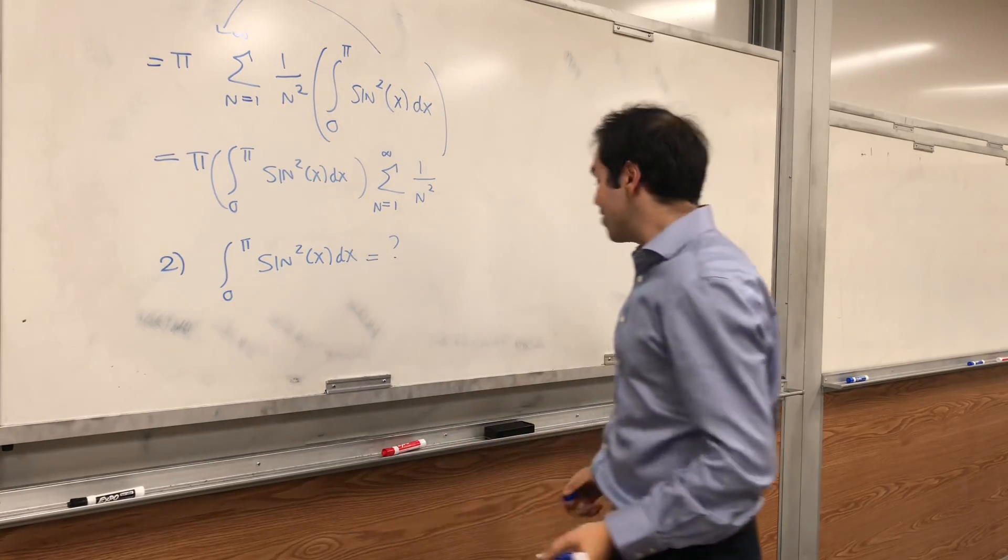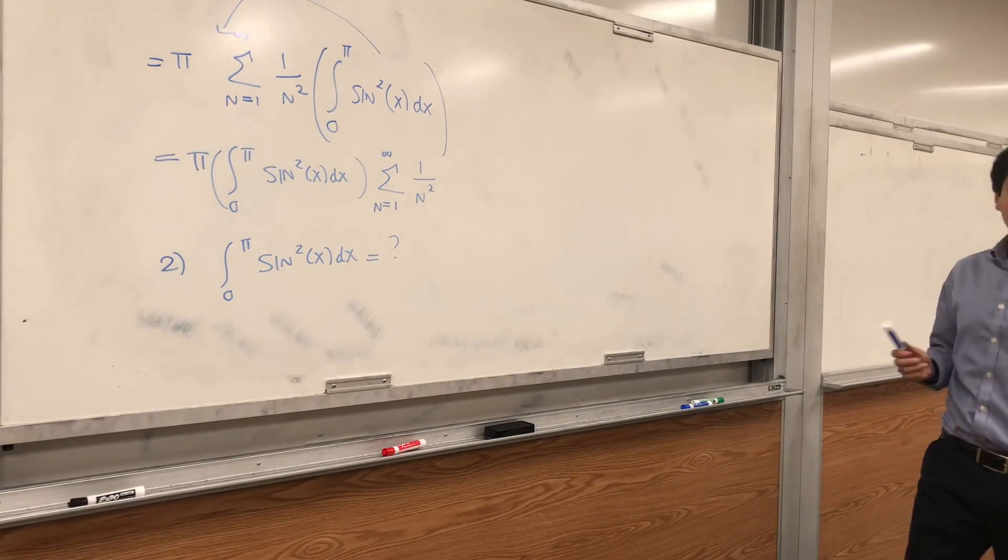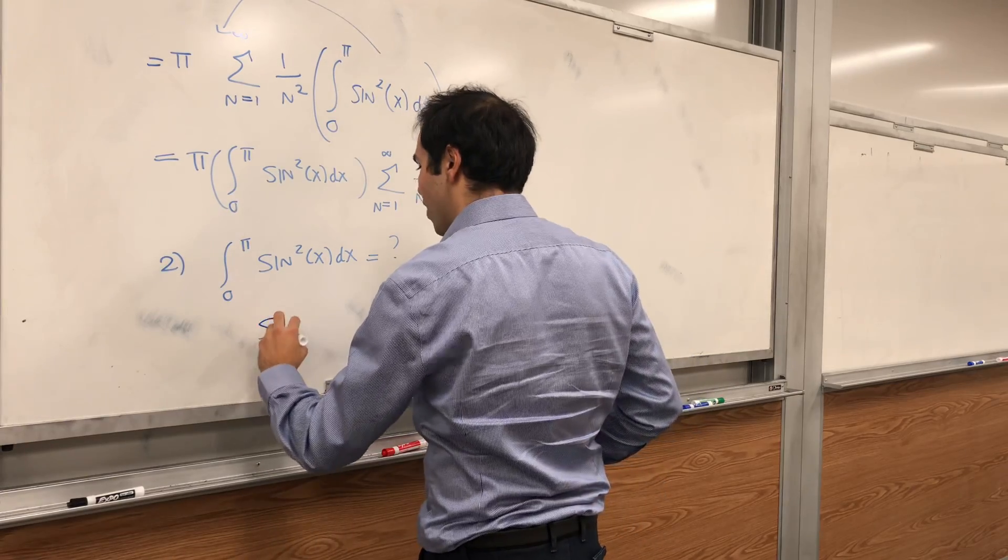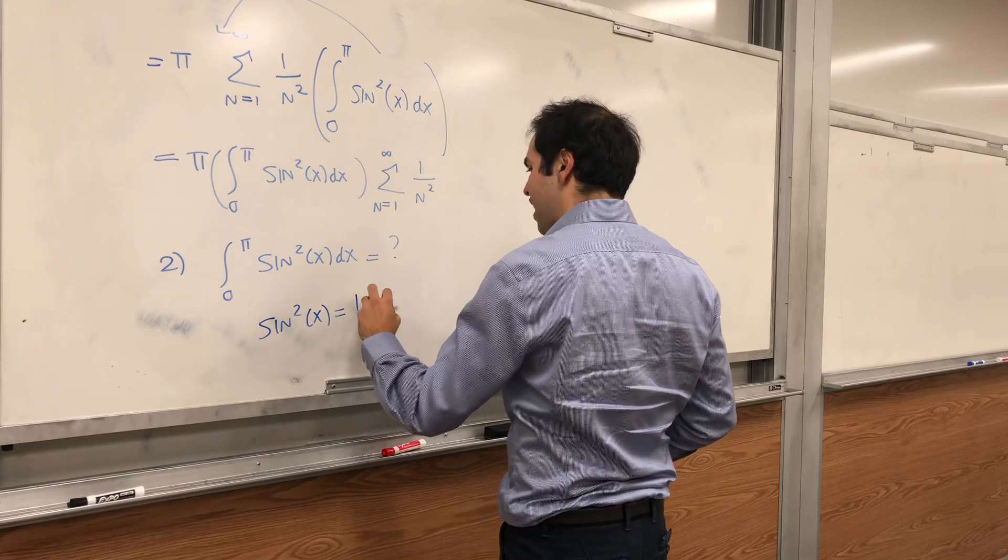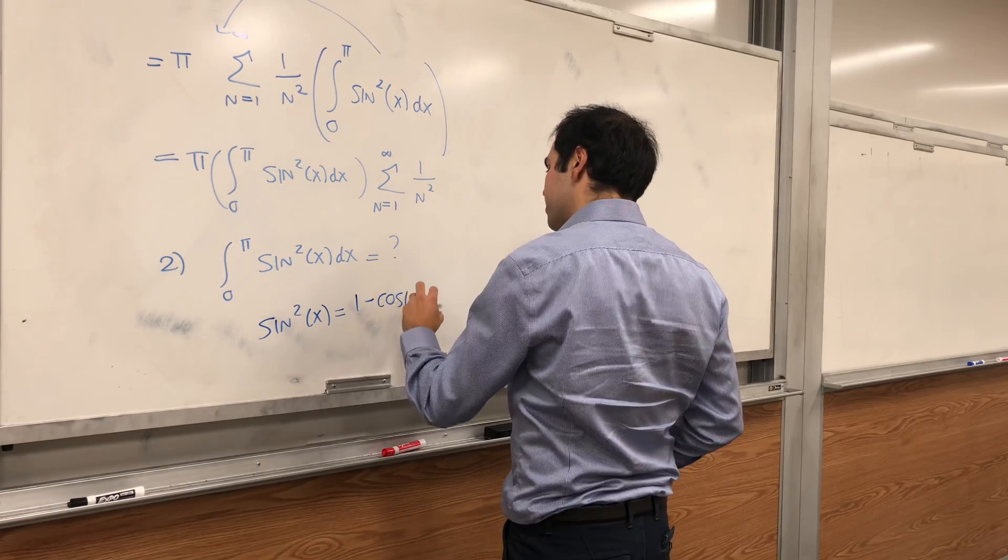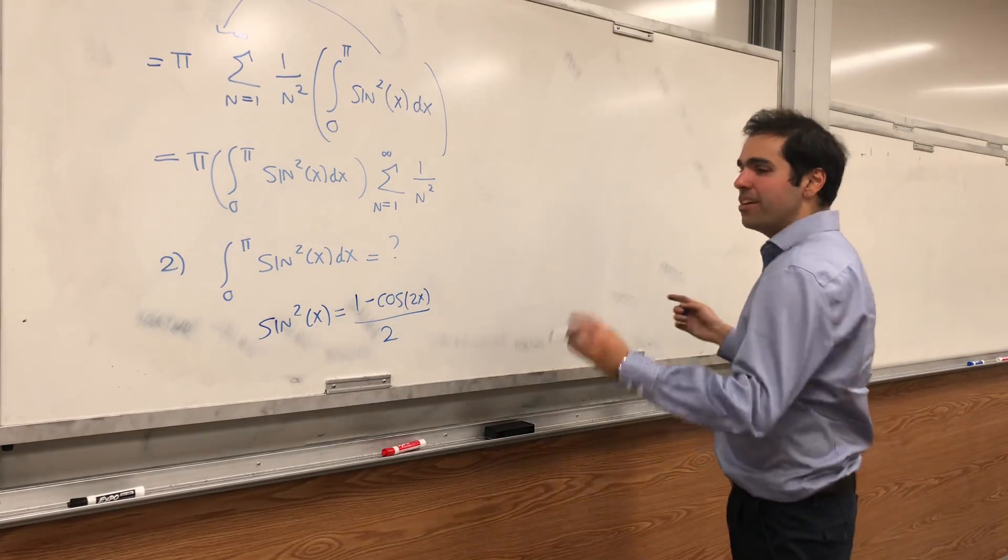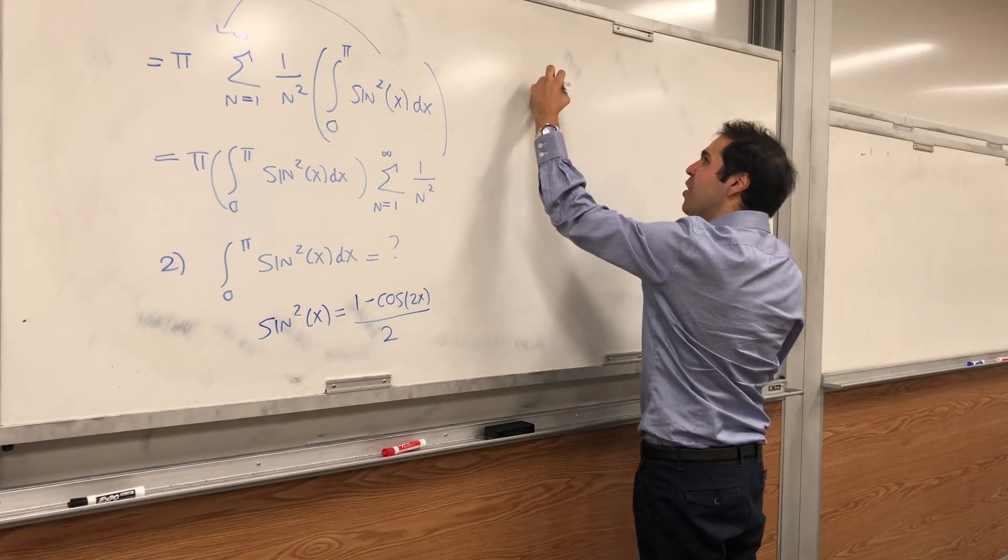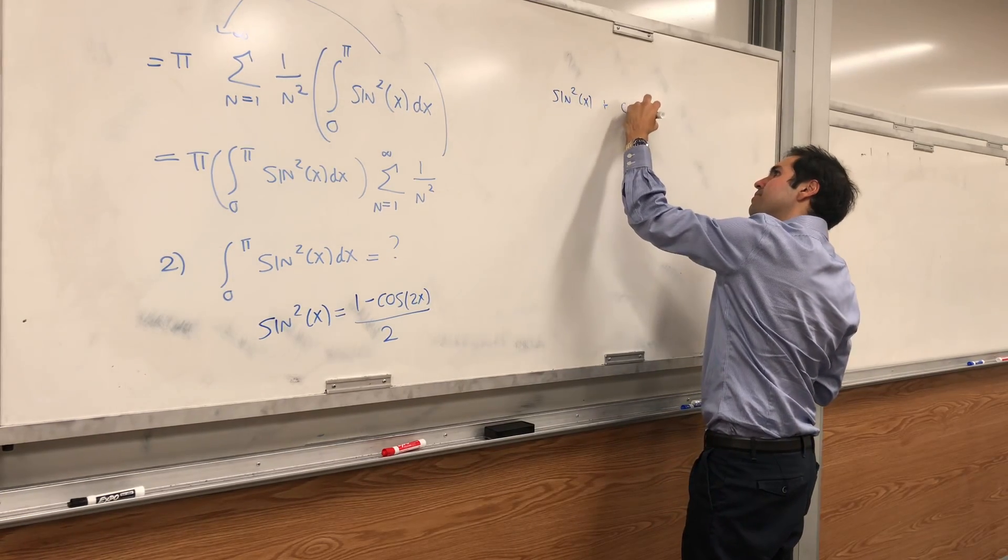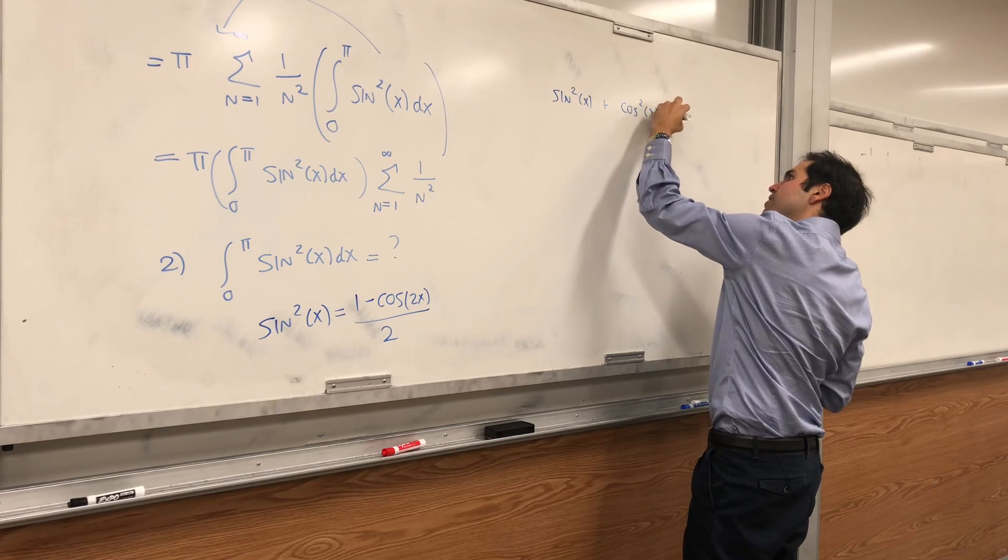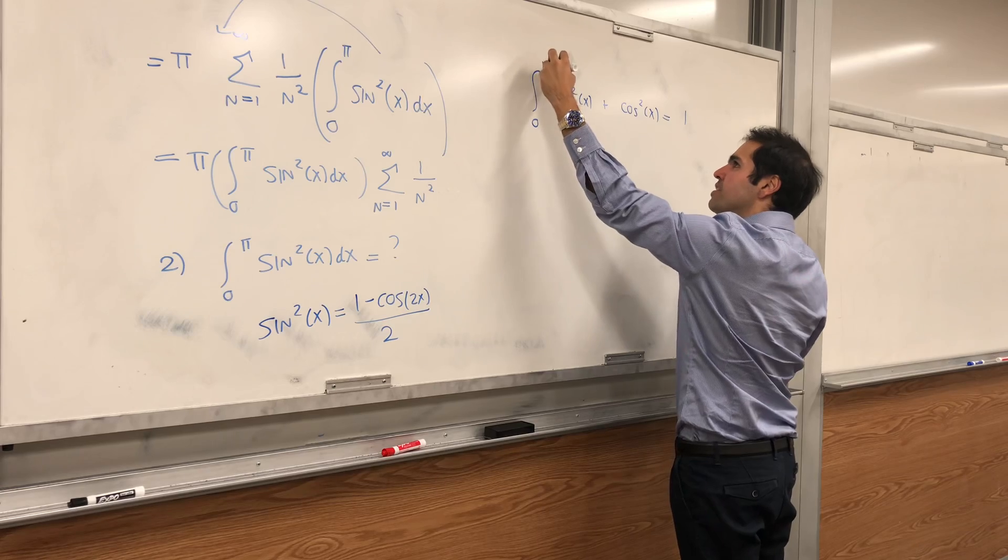Let's calculate the integral from 0 to pi of sine squared of x dx. I have done a video on this, but it turns out you can use the fact that sine squared of x is 1 minus cosine of 2x over 2 and you just integrate that. But here's a cleverer way. Notice, sine squared of x plus cosine squared of x equals 1, the trig identity.